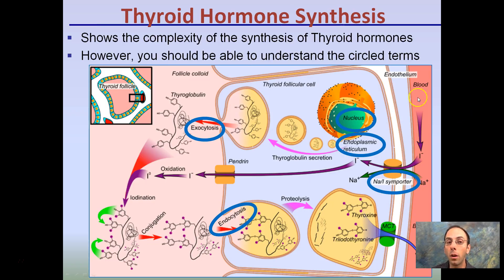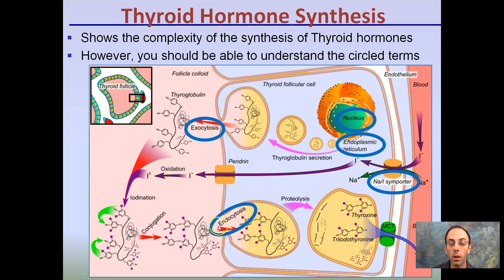The last part covers the thyroid hormone synthesis process, which is very complex. However, you should be able to understand the circled items highlighted in blue. Some of these refer back to other video lectures, such as organelles including the nucleus and endoplasmic reticulum, symporters, endocytosis, and exocytosis. This is a good way to make sure you can put all the pieces together from the series of videos. You're welcome to go back and review those if you're unfamiliar with any of these terms.